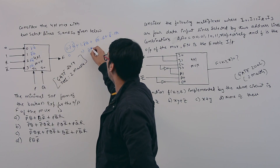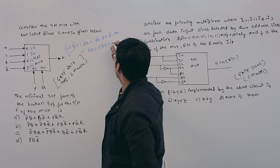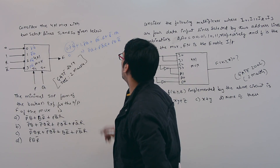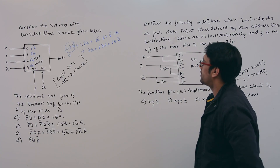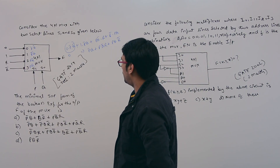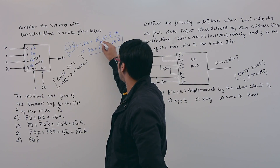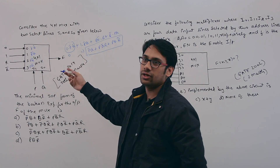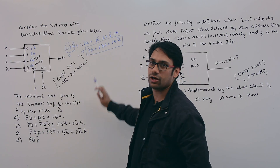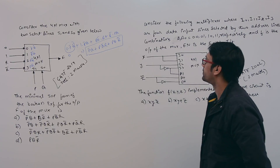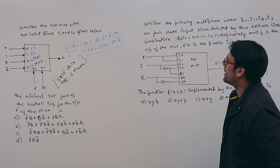The expression becomes: P'Q + PQ'R + PQR' + PQR'. We need to find the minimal expression for this. The approach is to first derive this expression and then minimize it. Let us now minimize this particular expression.